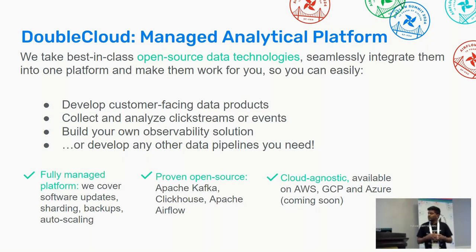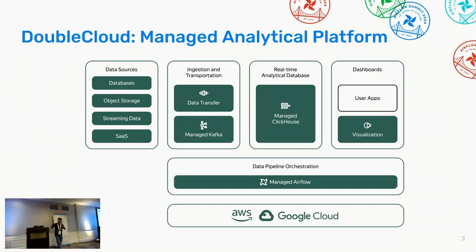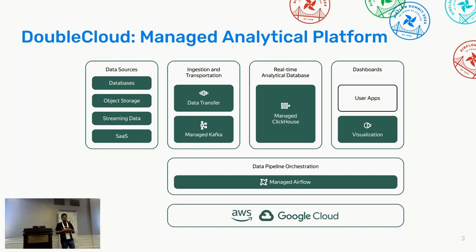The main use cases we see in DoubleCloud are around real-time streaming, observability — collecting logs, processing them for faster analytical performance — and building data pipelines. You can see all these components are like Lego bricks: you pick and choose what you want. On the left-hand side are the data sources, where you collect data from different points. We use Airbyte connectors for that, and once collected, you store it in our managed ClickHouse service. We also need this orchestration of all these components.